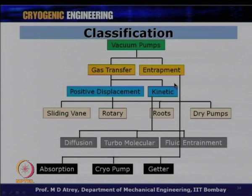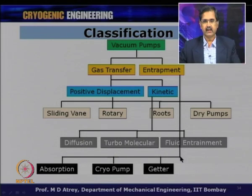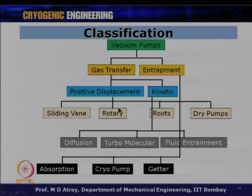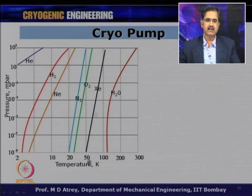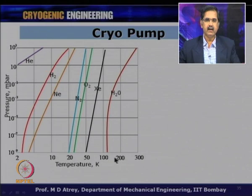Now, as an example of entrapment-type vacuum pumps, let us see how a cryopump works. A cryopump works by lowering the temperature to bring down the vapor pressure of gases — the gas ceases to be in a gaseous state and gets frozen solid. For example, at 100 Kelvin...